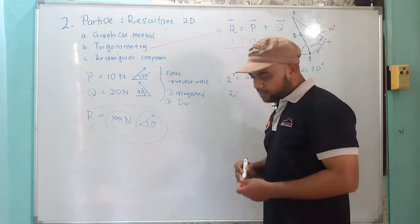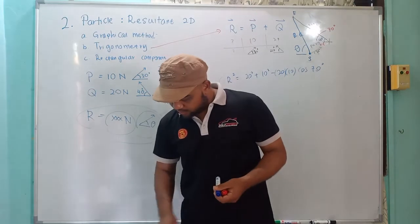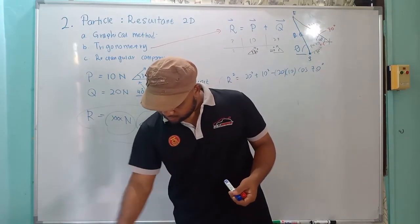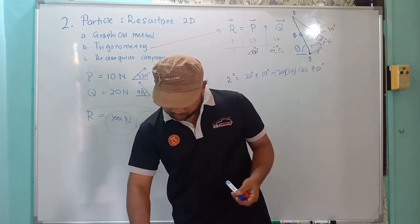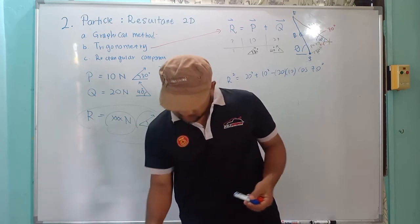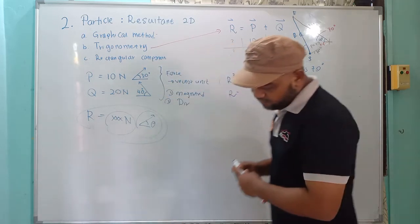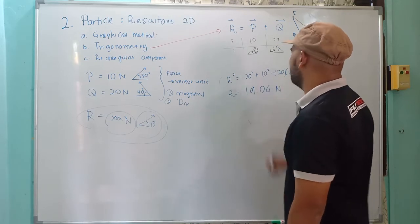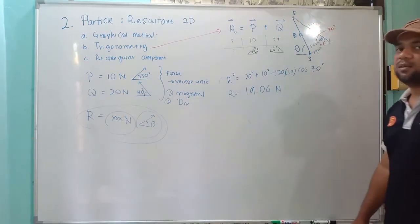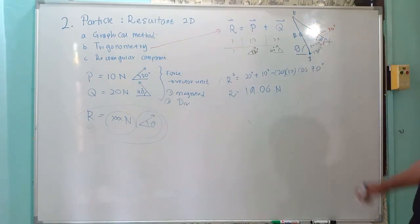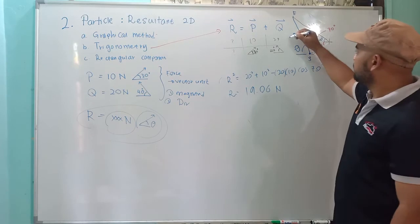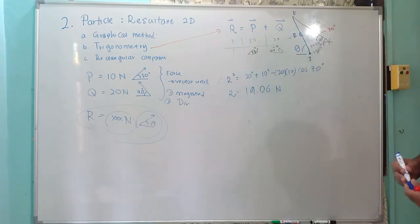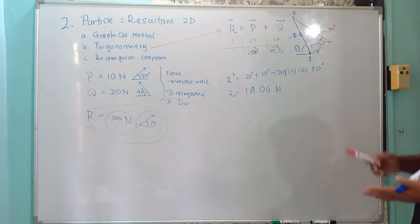Calculate that — I've already calculated it. R is 19.06 Newton. So this is your R. Now you know the value of R: 19-point-something. This is only the magnitude of R.